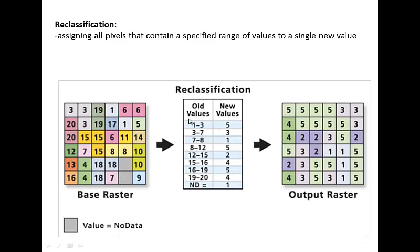For example, we might say all the values that fell between 1 and 3 are now going to have a value of 5. All the pixels that had values between 3 and 7 are now going to have a value of 3 in the new reclassified raster. So the idea is to shrink down the number of values, and each value in the new raster will represent a class.